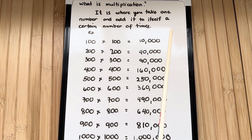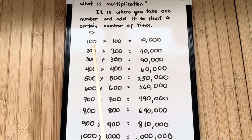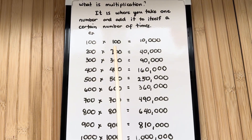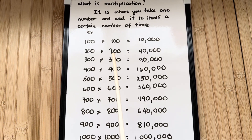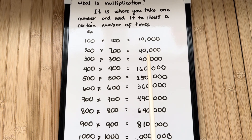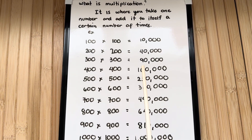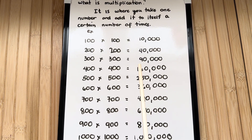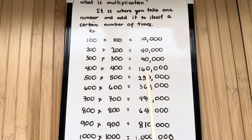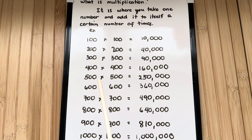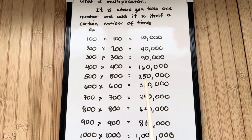1,000,000 — a certain number of times. Example: 100 times 100 is equals to 10,000. 200 times 200 is equals to 40,000. 300 times 300 is equals to 90,000. 400 times 400 is equals to 160,000. 500 times 500 is equals to 250,000.